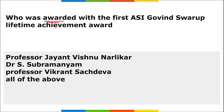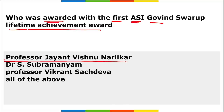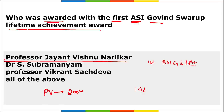Next: who was awarded the first ASI Govind Swaroop Lifetime Achievement Award? It was Professor Jayant Vishnu Narlikar, an eminent astrophysicist and past president of the Astronomical Society of India. He was awarded the inaugural edition of this award for his outstanding contribution in the field of astronomy and astrophysics in India. The award was first announced at the 41st ASI meeting held at IIT Indore in Madhya Pradesh. Professor Narlikar was also awarded the Padma Vibhushan in 2004 and Padma Bhushan in 1965.